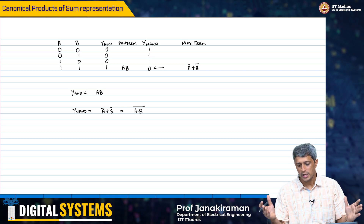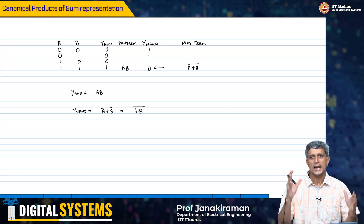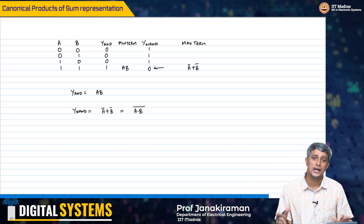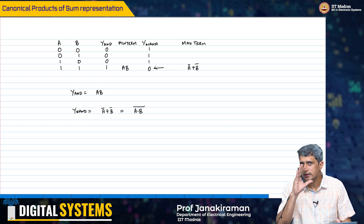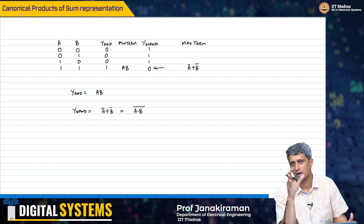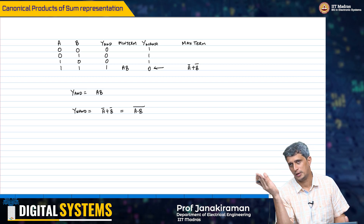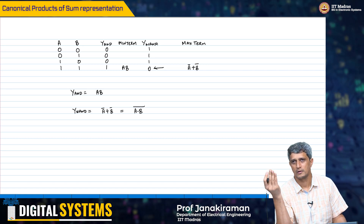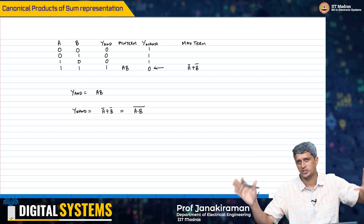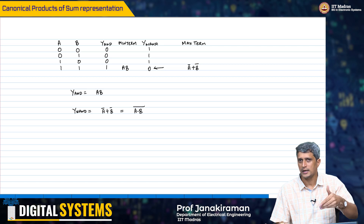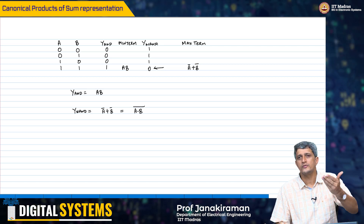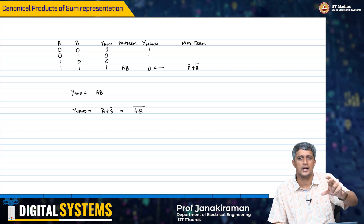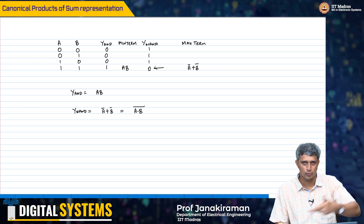So, the two representations — sum of products and product of sums — are the same. If you have more 1s and very few 0s in the truth table, it may be better to deal with the product of sum implementation. On the other hand, if you have sparsely populated 1s, it may be better to use the sum of product implementation. Of course, if you do Boolean simplification on both, you will end up with the same answer irrespective of which canonical representation you use. In summary, you can now take a black box, get the truth table, get the minterms or the maxterms, simplify the whole thing, and implement the Boolean expression with as few gates as possible — AND, OR, and inverter.